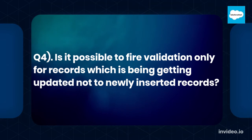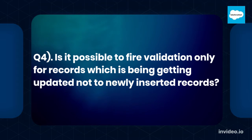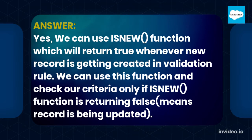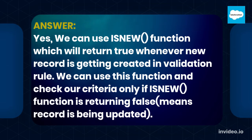Q4. Is it possible to fire validation only for records that are being updated, not for newly inserted records? Yes. We can use the ISNEW() function, which returns true whenever a new record is being created. We can use this function and check our criteria only if ISNEW() is returning false, meaning the record is being updated.